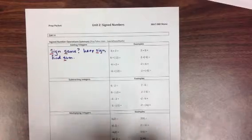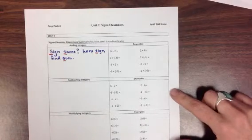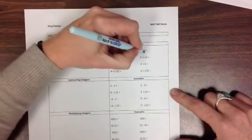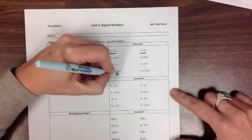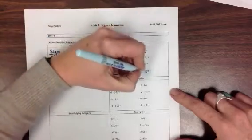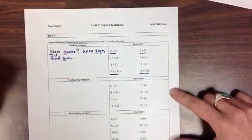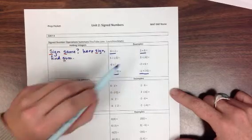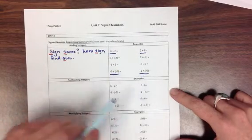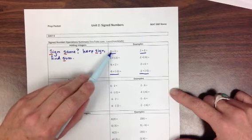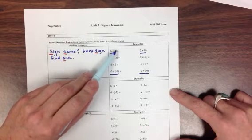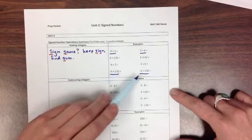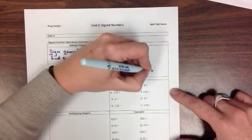So for the problems on the right over here, our 'signs are the same, find the sum' problems are going to be 6 plus 2, 2 plus 6, and negative 6 plus negative 2, negative 2 plus negative 6. These are both positive, and for these they're both negative. So I keep the sign. These started as positive numbers, so they're going to have positive answers. These started as negative numbers, so they're going to have negative answers.